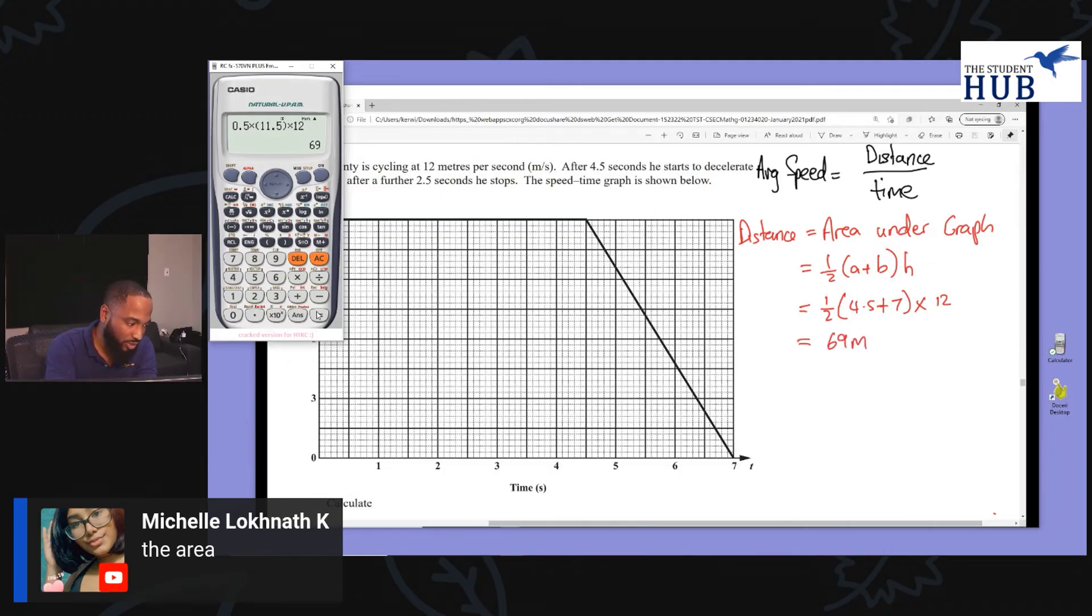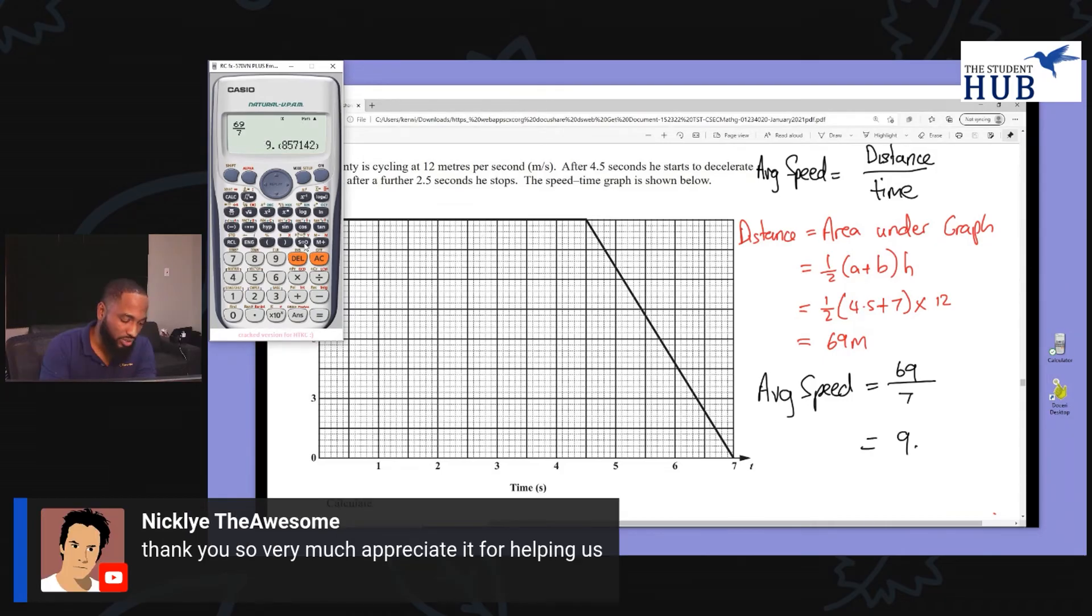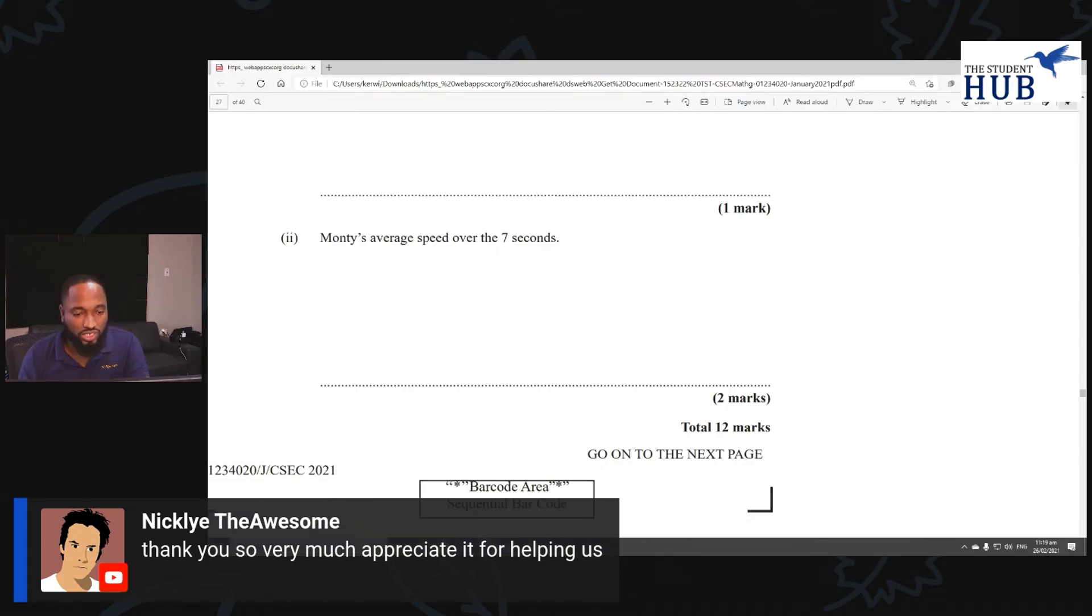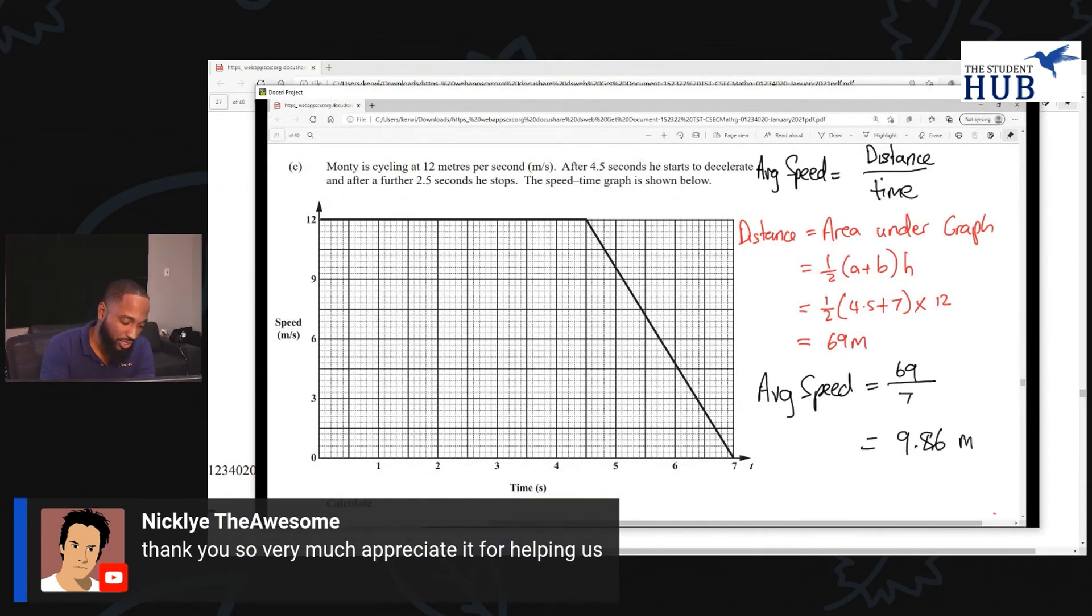And finally, average speed, back to average speed now, would be 69 over the whole time. It took 7 seconds over 7. And that answer is 9.86, three significant figures. Sounds nice to me. And since we're dealing with speed, meters per second, this is three significant figures.